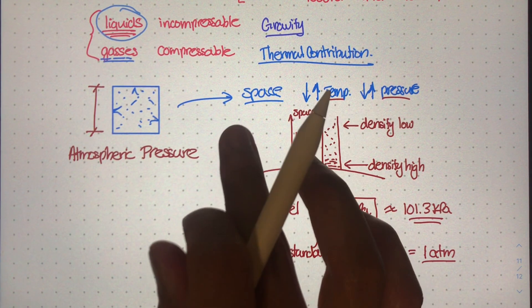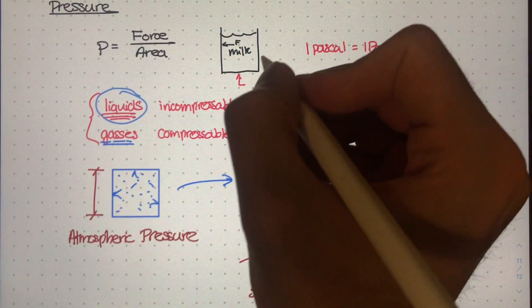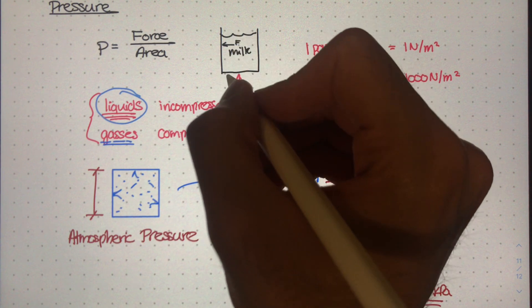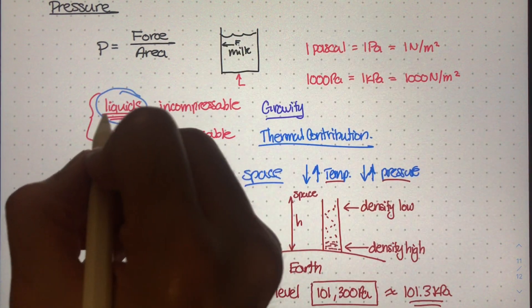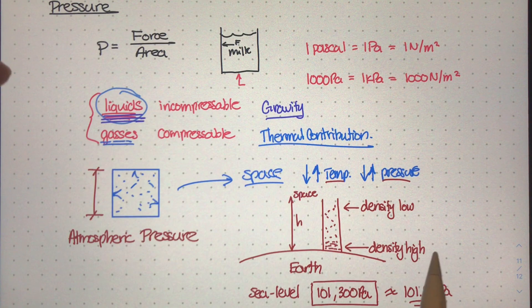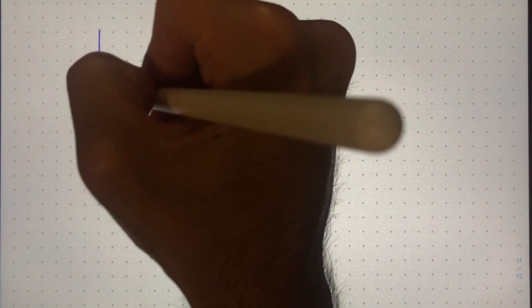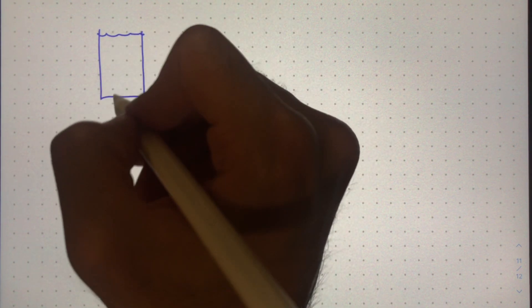In this video, I really want to talk about how we can determine the pressure at any point inside a body of liquid. So if I drew some kind of container filled with some type of liquid, how could we determine the pressure at the very bottom? How could we determine the pressure at the very top? How could we determine the pressure anywhere in between the top and the bottom of this body of liquid?